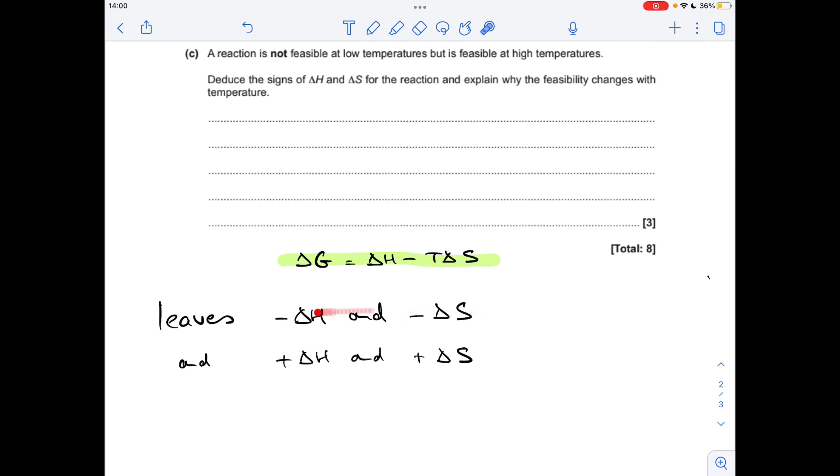So if we look at this one first, delta H is negative, delta S is negative, so that's going to become positive. So as temperature increases, this term's getting more and more positive, when you combine it with that negative delta H, delta G is actually going to get less negative, and so the reaction's going to become less feasible at high temperatures, whereas this one, it's saying it becomes more feasible.